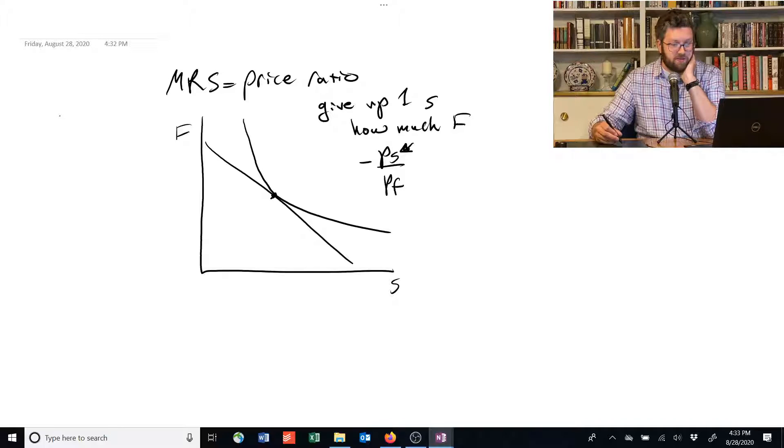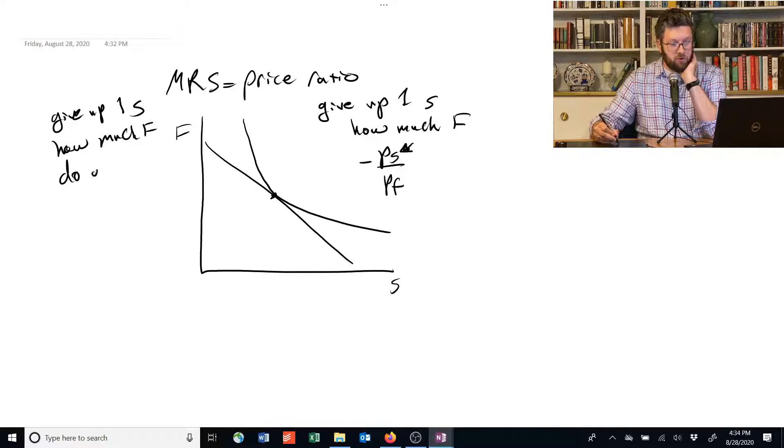Meanwhile, the marginal rate of substitution tells us if you give up one unit of shelter, how much food do you require to have the same utility?